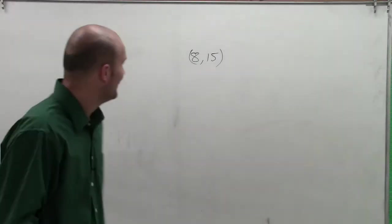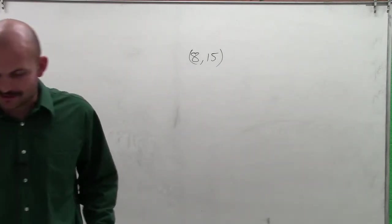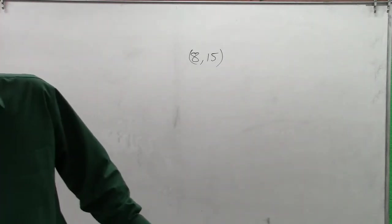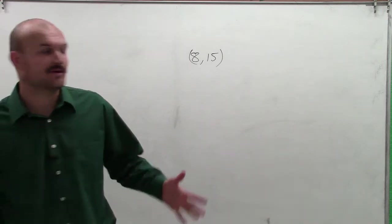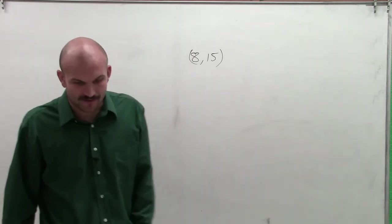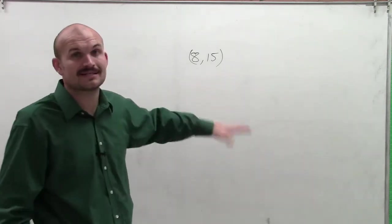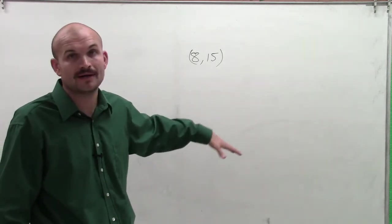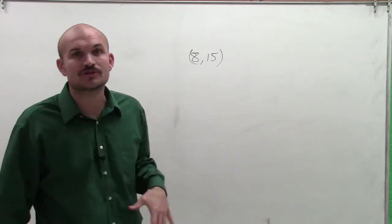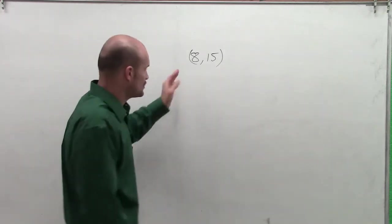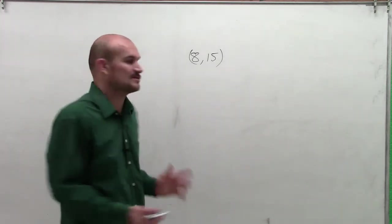Here we go. We have a coordinate point, and we need to find all six trigonometric functions. We know it's not on the unit circle because the unit circle has a radius of 1, and this point won't fall within a radius of 1. The main important thing is, let's graph this coordinate point.